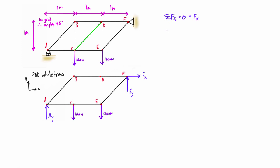Next, we take the sum of forces in the y direction and set that equal to zero. We'll sum up all the y forces: Ay plus Fy minus 100 minus 400, and that's all equal to zero. Simplifying that, we get Ay plus Fy equals 500 newtons.